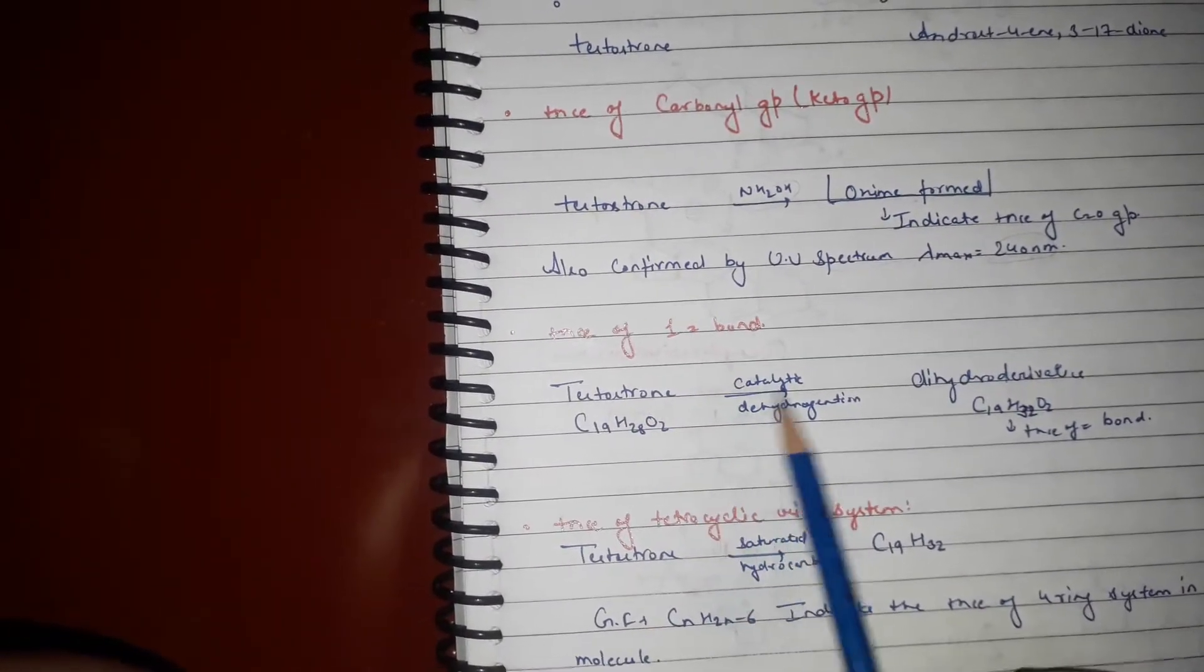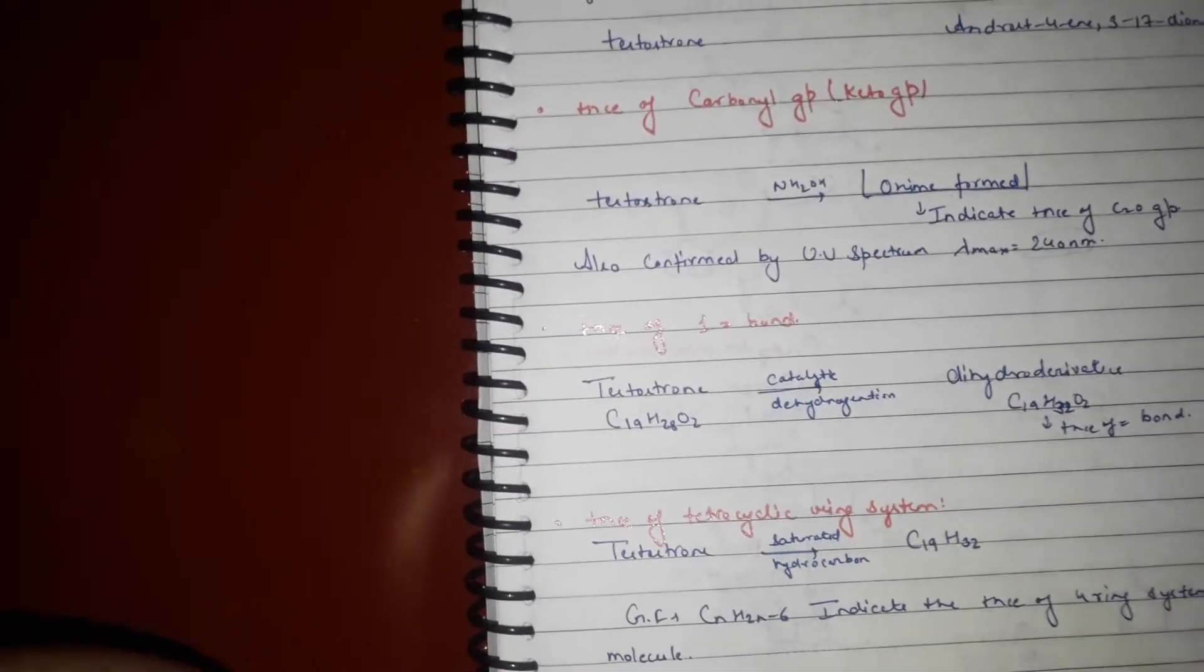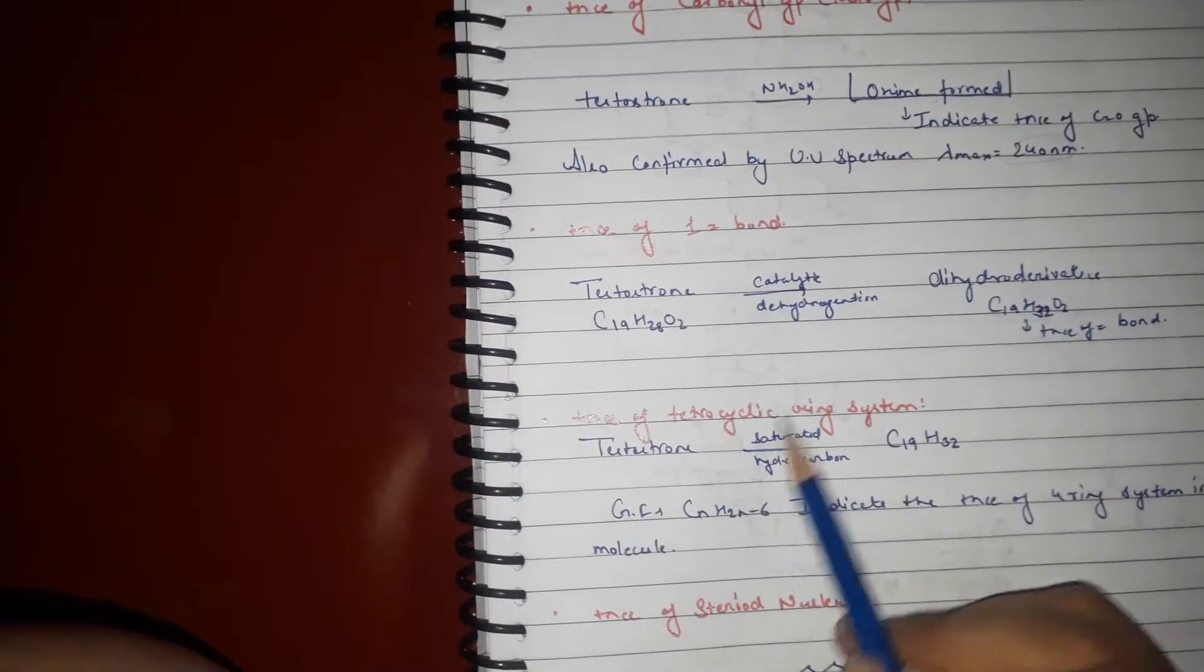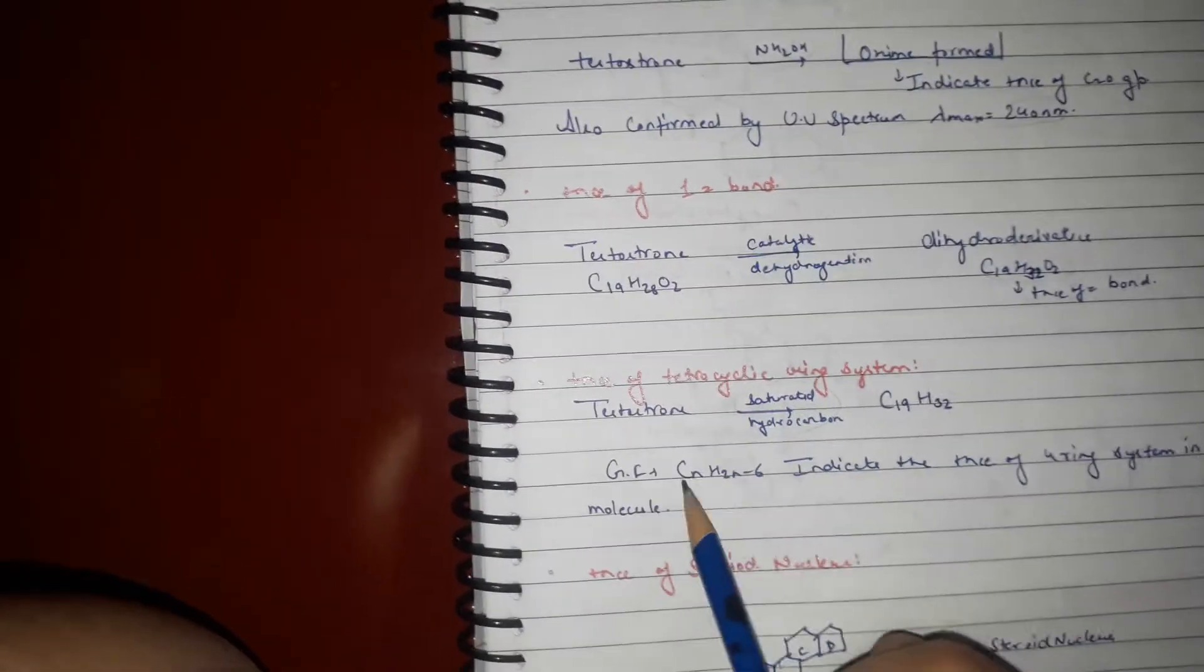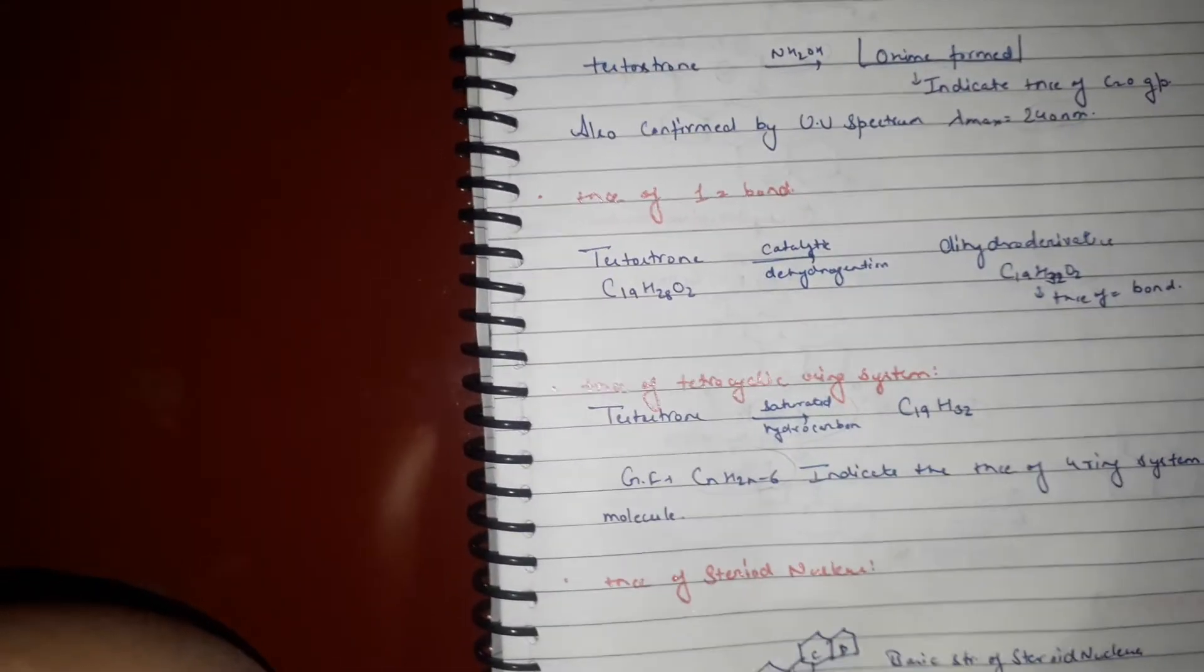Presence of one double bond. Catalytic dehydrogenation gives C19H30O2, presence of tetracyclic saturated hydrocarbon gives C19H32. General formula C19H2N-6 indicates a 4-ring system in the molecule, presence of steroid nucleus ABCD ring, basic structure of steroids.